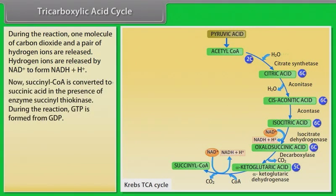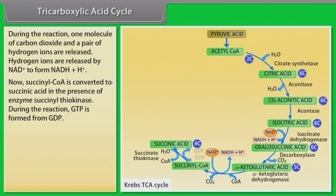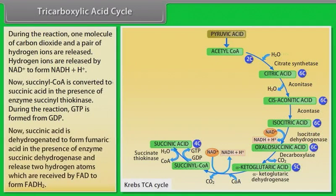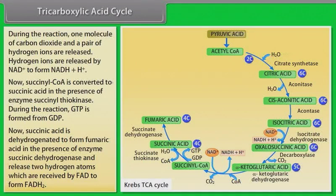Hydrogen ions are accepted by NAD⁺ to form NADH+H⁺. Succinyl CoA is converted to succinic acid in the presence of enzyme succinyl thiokinase; during the reaction, GTP is formed from GDP. Succinic acid is dehydrogenated to form fumaric acid in the presence of enzyme succinic dehydrogenase, releasing two hydrogen atoms which are received by FAD to form FADH₂.